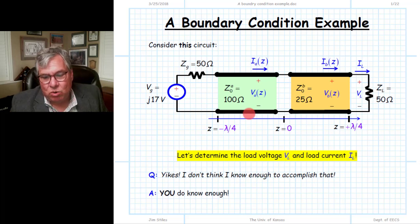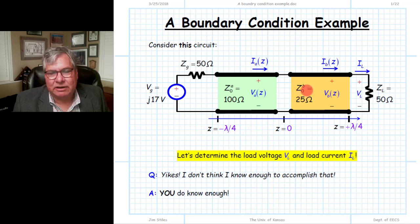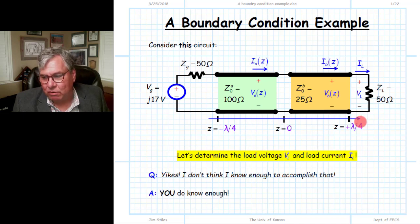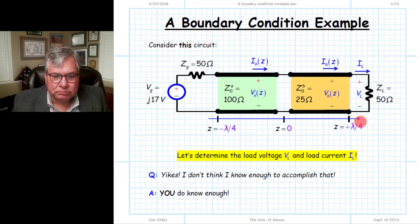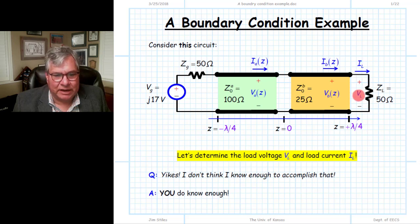There are no unknowns. We have the source, a transmission line characteristic impedance, a second transmission line characteristic impedance, and the load. We know the impedance. We know the electrical length of each transmission line, which turns out to be lambda over 4 in this case. So the question becomes: what is the current and voltage at the end of this line?